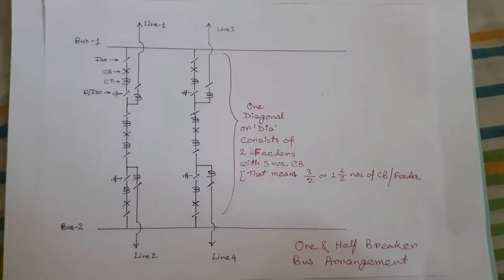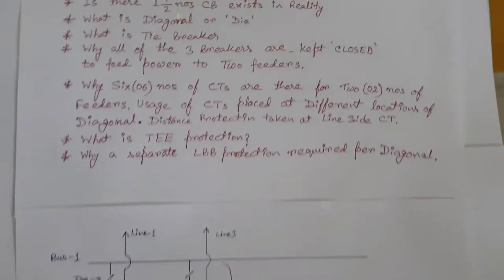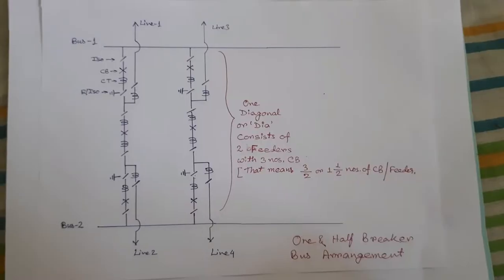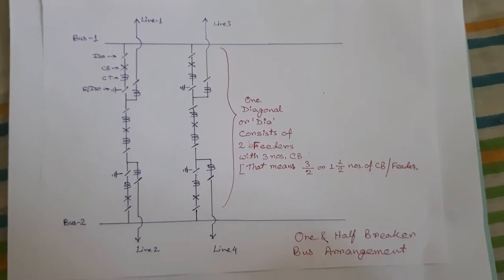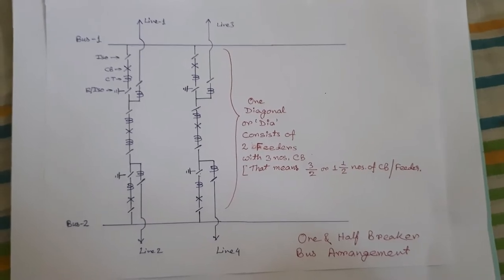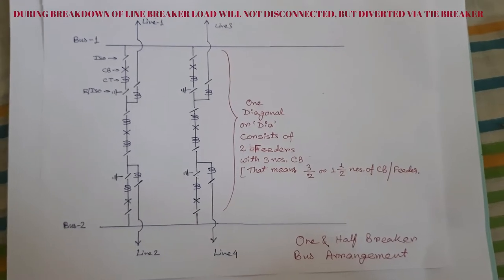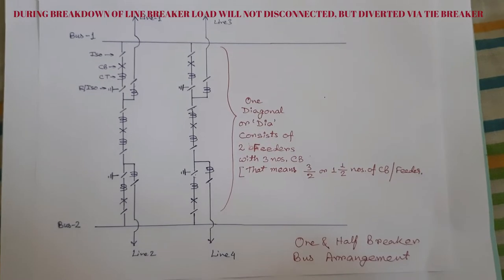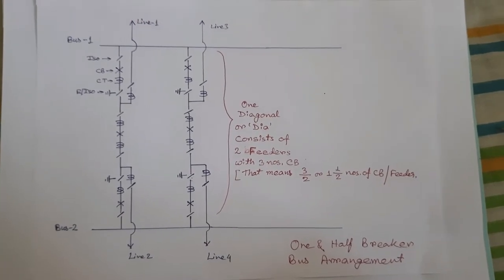In this video, we will do some point-wise discussion on the one and half breaker scheme. One and half breaker scheme is actually one kind of bus arrangement, like the one main one transfer scheme or two main bus one transfer bus scheme. In the one and half breaker scheme, there are three circuit breakers used for two feeders.